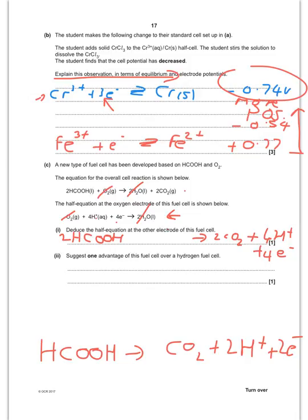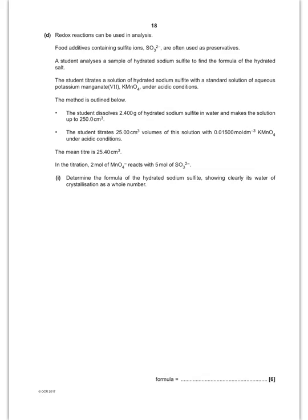So why would this cell be better than hydrogen? Well, clue is in here really. Methanoic acid is a liquid and therefore much easier to transport than hydrogen gas.